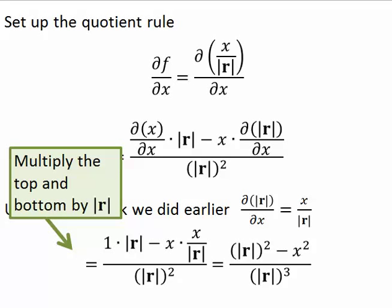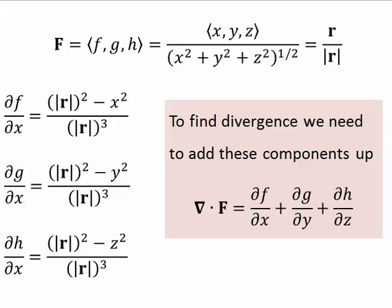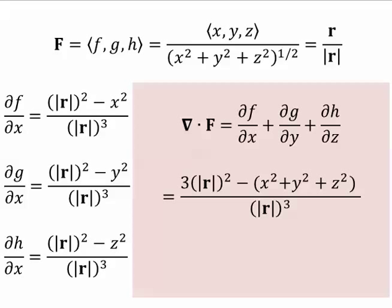Now, I'm not going to do it for the other two components. You'll have to do it yourself or just believe me. But the other two partials I have here. Now, to find divergence, we need to add up these three components. So think about that. What would they add up to? This is what I get.